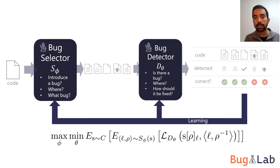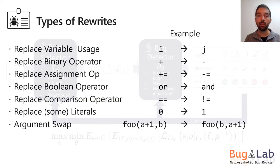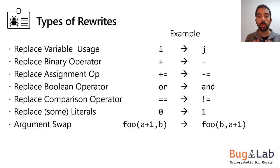So now that I've discussed the high-level idea, let's look at one implementation of BugLab for Python. First, we opt for a few kinds of simple rewrites shown here.